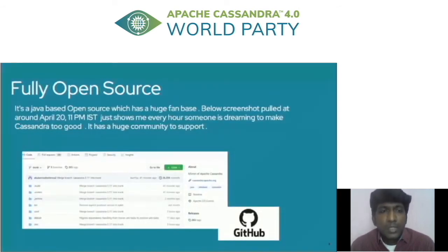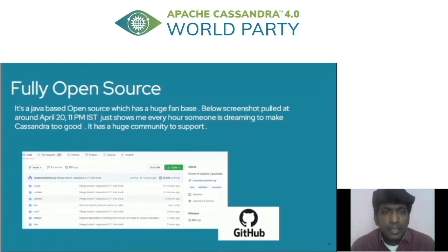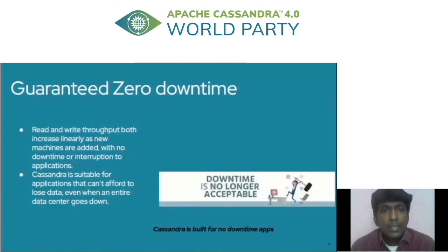On the fully open source side, Cassandra has a very large fan base community. I pulled a screenshot at around 11 p.m. IST in 2020, and for the past one hour there were around 14 to 19 comments, which shows a huge amount of community activity for this codebase. There are 16k open bugs from past years, and 14k bugs have been actively solved.